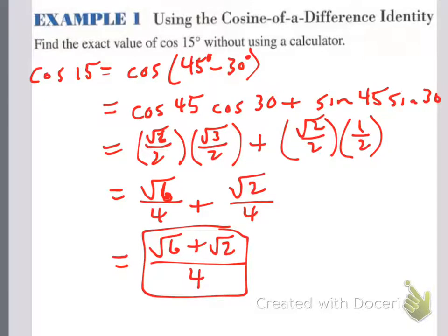The idea is we want to take the angle given and break it down to either a sum or a difference of 30s, 45s, and 60s, and use our reference triangles and unit circle to help us.